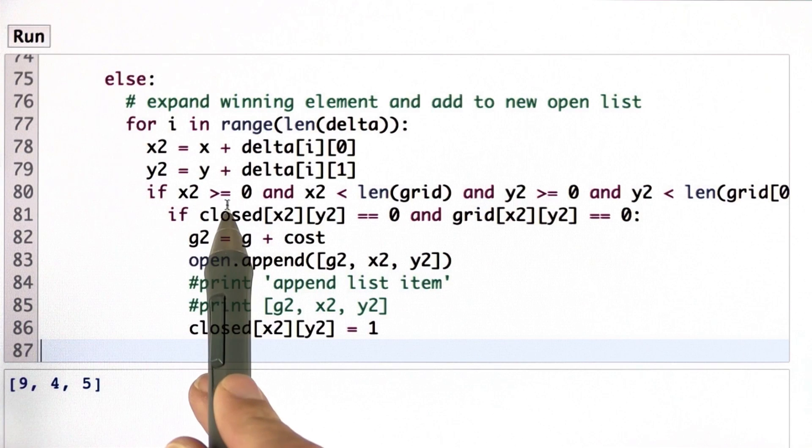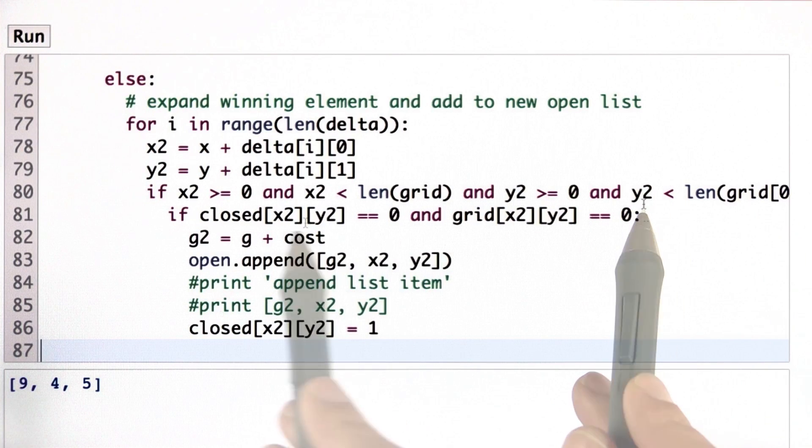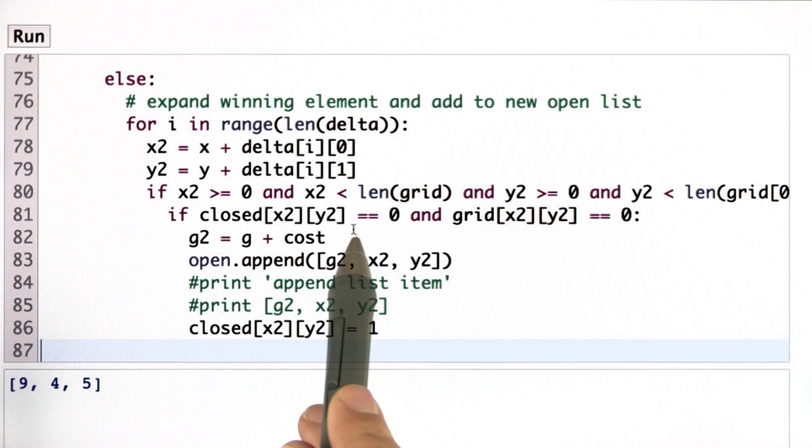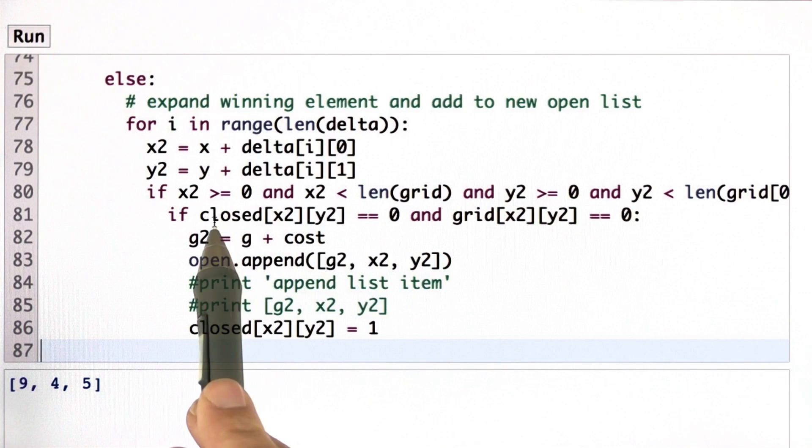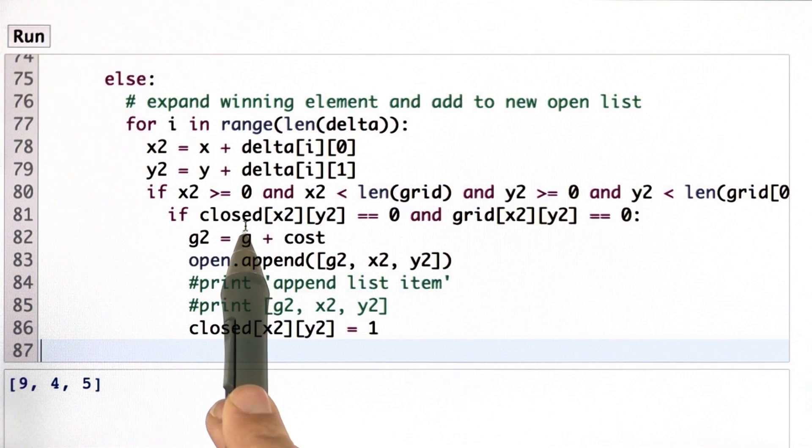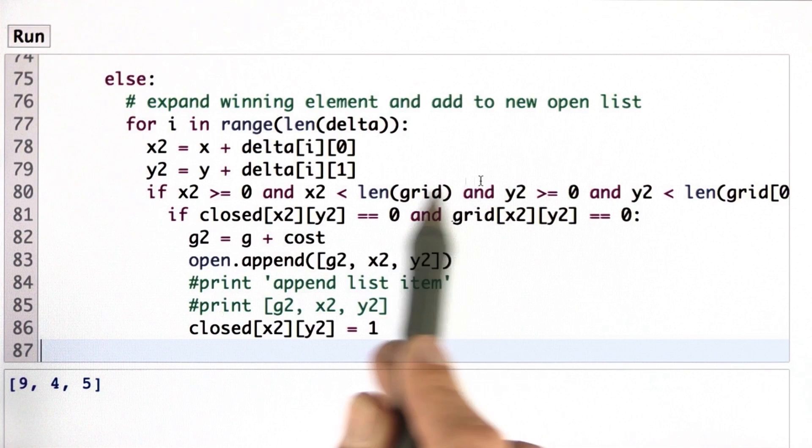If x2 falls into the grid and y2 falls into the grid, and x2, y2 is not yet checked, which is tested by this field called closed, and the grid cell is navigable. There's no obstacle here. If all these things are correct, then I found an expansion that I now add to the open list.